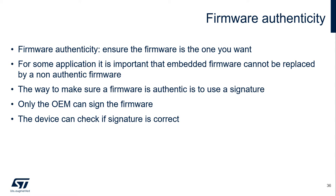The way to ensure that a firmware is authentic is to use a signature. The private key, which will be used to sign the firmware, must be kept secret at the OEM site so that only the OEM can sign the firmware. The device can then check whether the signature is correct or not using the corresponding public key.